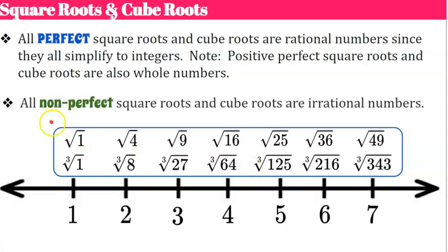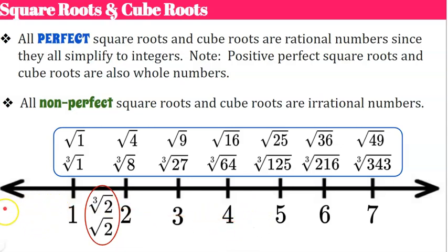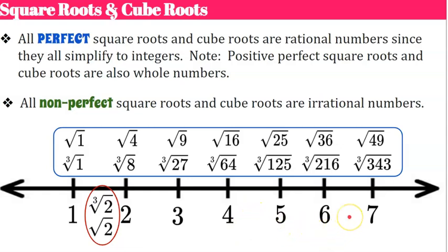All non-perfect square roots and cube roots are irrational numbers — those that fall between our integer values on the number line. When you use a calculator to find them, as we learned when approximating to the nearest hundredth, they do not have a repeating pattern. So square root of 2 or cube root of 2 produce a non-repeating, non-terminating decimal, making them irrational.